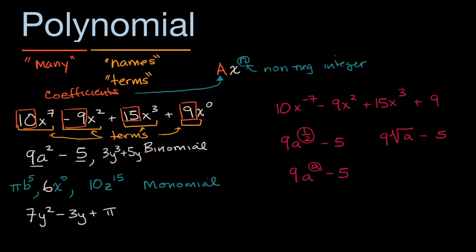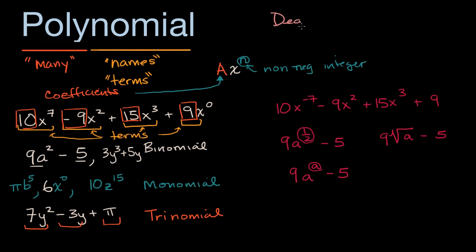Now you'll also hear the term trinomial. A trinomial is when you have three terms. And 7y squared minus 3y plus pi right over here is an example. This is the first term, this is the second term, and this is the third term.